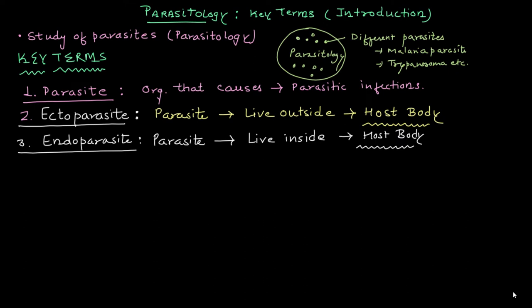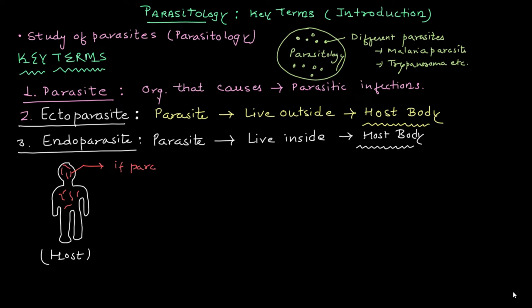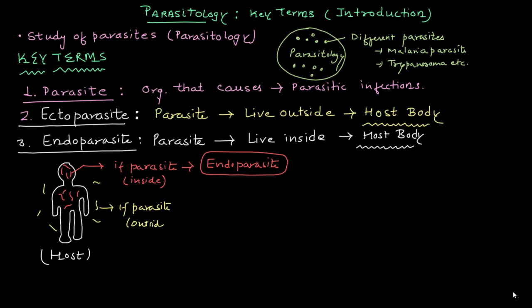Let me show this in a creative way using a diagram of the human body — that is the host in this case. If the parasite is present inside the body, living in the organs and tissues, we call it an endoparasite. If the parasite is present on the surface or outside the body, not penetrating inside, we call it an ectoparasite.